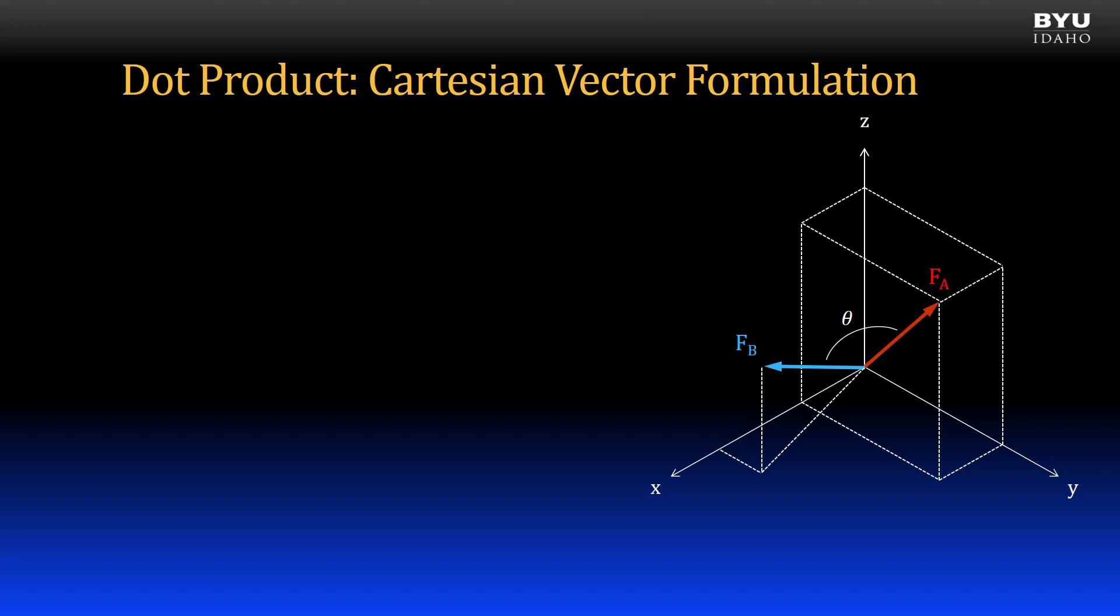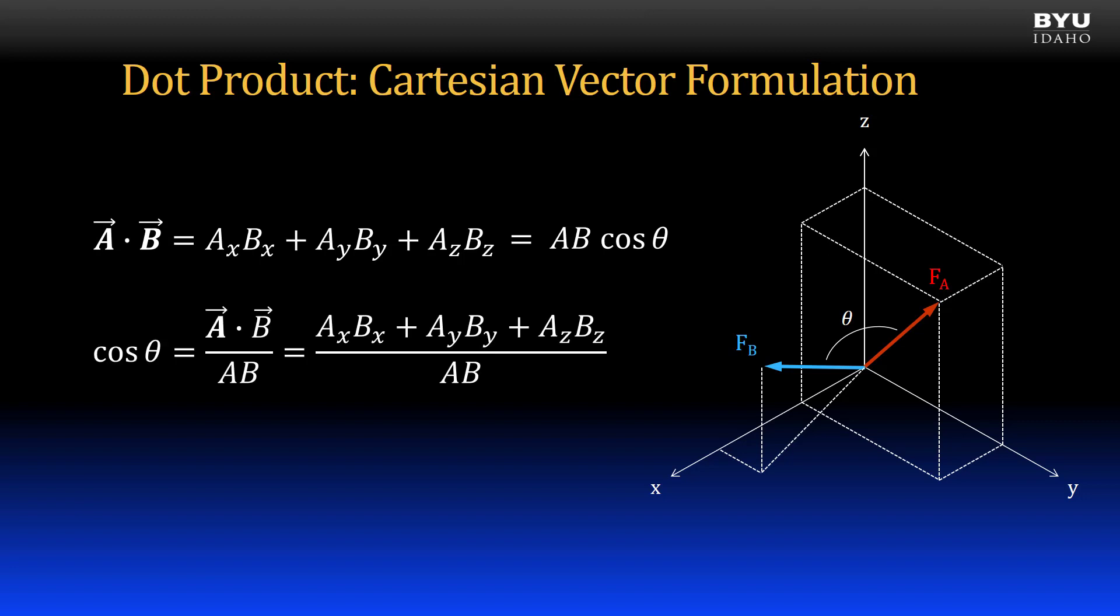Another use of the dot product which makes it very valuable is for finding the angle between two vectors. This is especially useful when the vectors are in three-dimensional space like the two shown in this figure. Suppose we want to find the angle theta shown. We can use the dot product to get it. We just found that A dot B gives us this expression, but it is also equal to the magnitude of the first vector times the magnitude of the second vector times the cosine of the angle between them. Knowing this, we can rearrange this formula to solve for the angle theta.